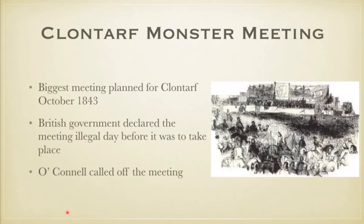In October 1843, one of the largest meetings was set to take place at Clontarf. They were planning to top the Hill of Tara meeting with even more people. However, with any large gathering there is bickering, fighting, and different viewpoints, and people were starting to worry it could kick off. The main concern was the British government, who saw this as a potential new rebellion against British rule. Because of this, the English government declared the meeting illegal the day before it was set to take place.